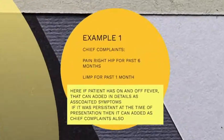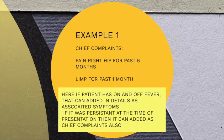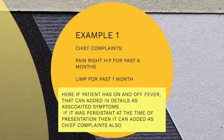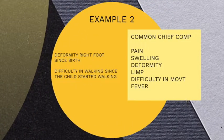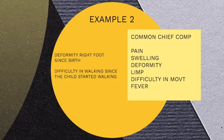For example, chief complaints: pain right hip for past six months and limp for past one month. If a patient has on-and-off fever, that can be added in details as associated symptoms when you describe the history of chief complaints. If the patient has persistent fever at the time of presentation, then it can be added as a chief complaint also. Another example: deformity right foot since birth, difficulty in walking since the child started walking. Common chief complaints in orthopedics include pain, swelling, deformity, limp (which is an abnormal way of walking), difficulty in movement, and fever.